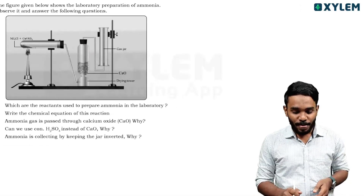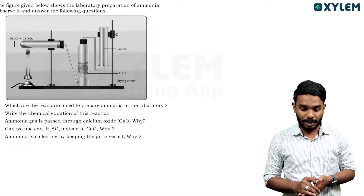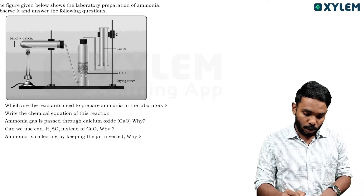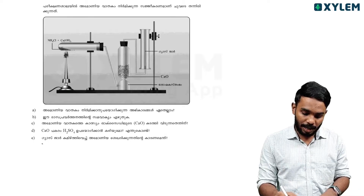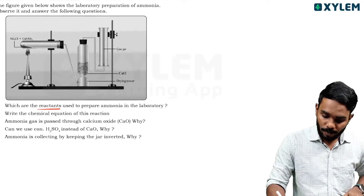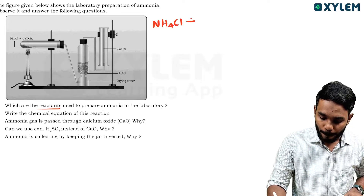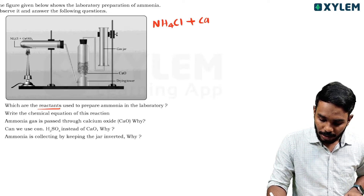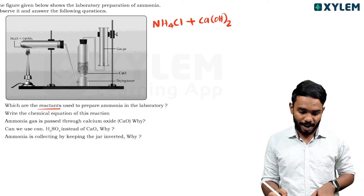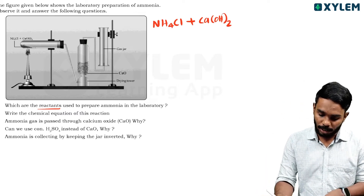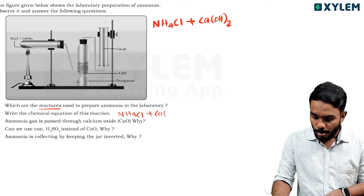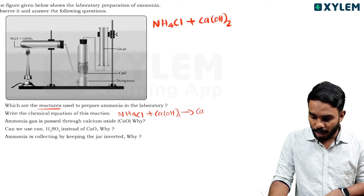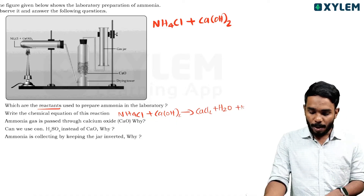Let's look at this picture — the ammonium preparation picture. We will talk about which are the reactants. The reactants are ammonium chloride plus Ca(OH)2, that is calcium hydroxide. The chemical equation: NH4Cl + Ca(OH)2 gives calcium chloride (CaCl2), plus water, plus ammonia gas (NH3).